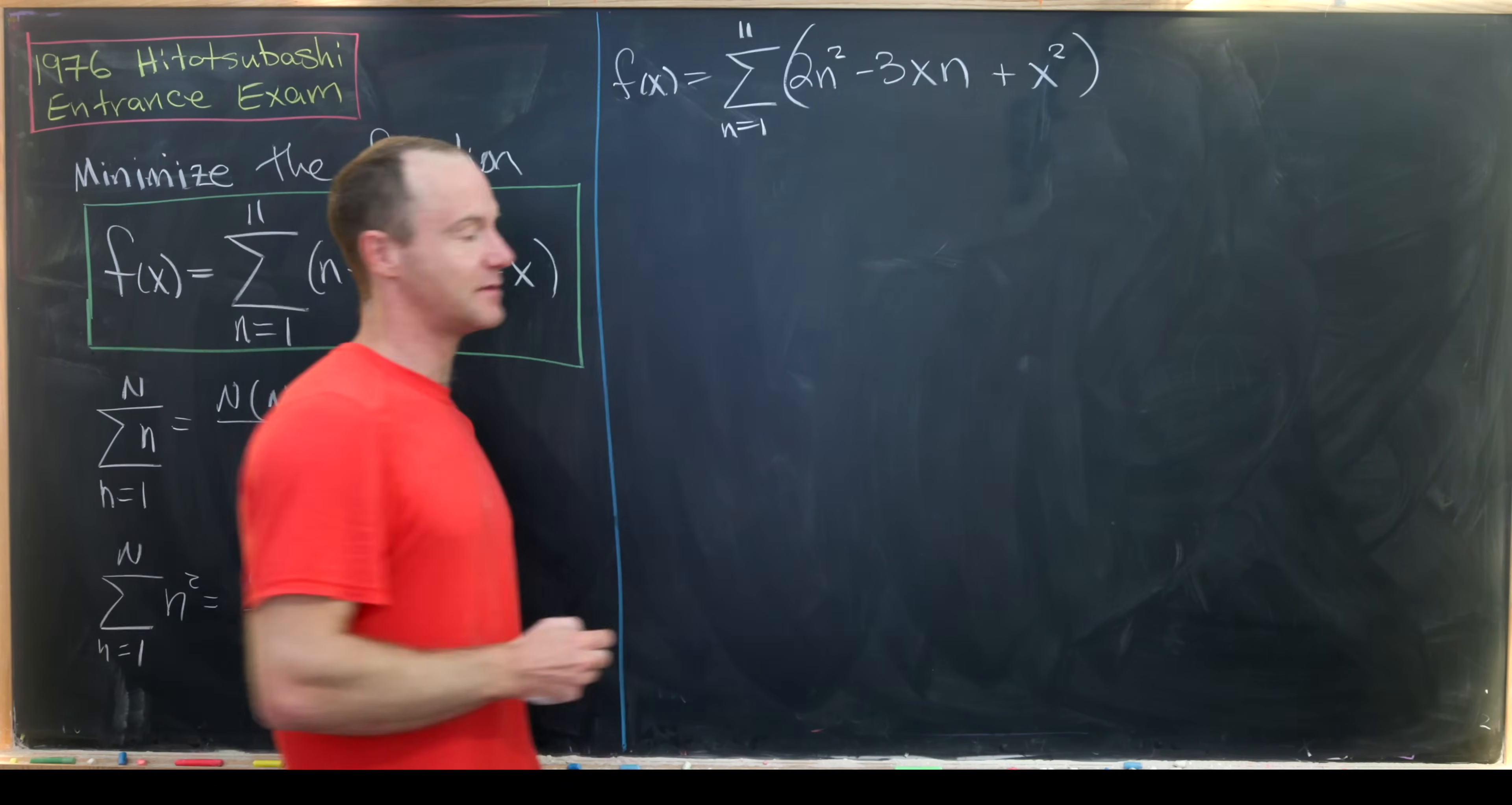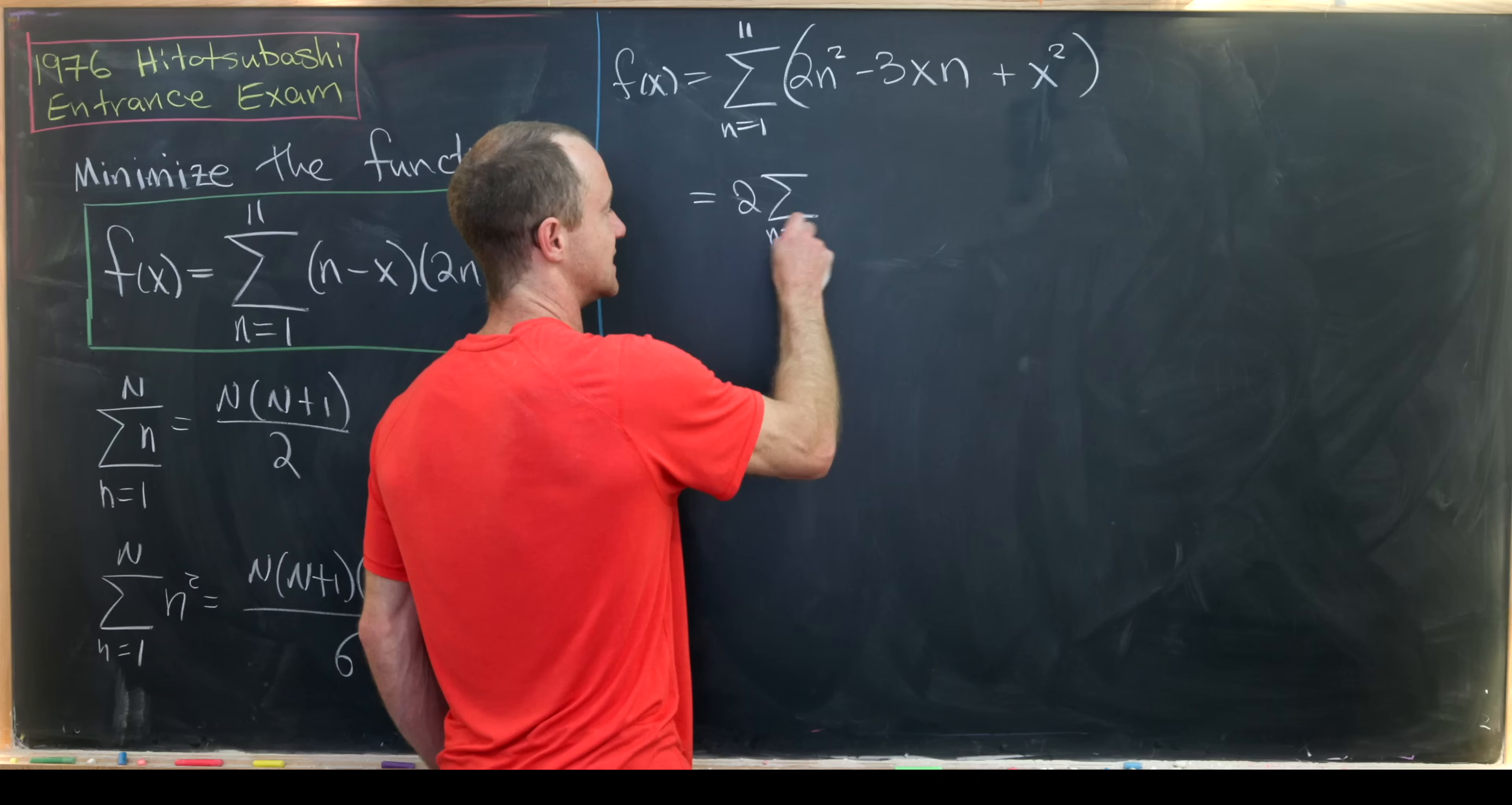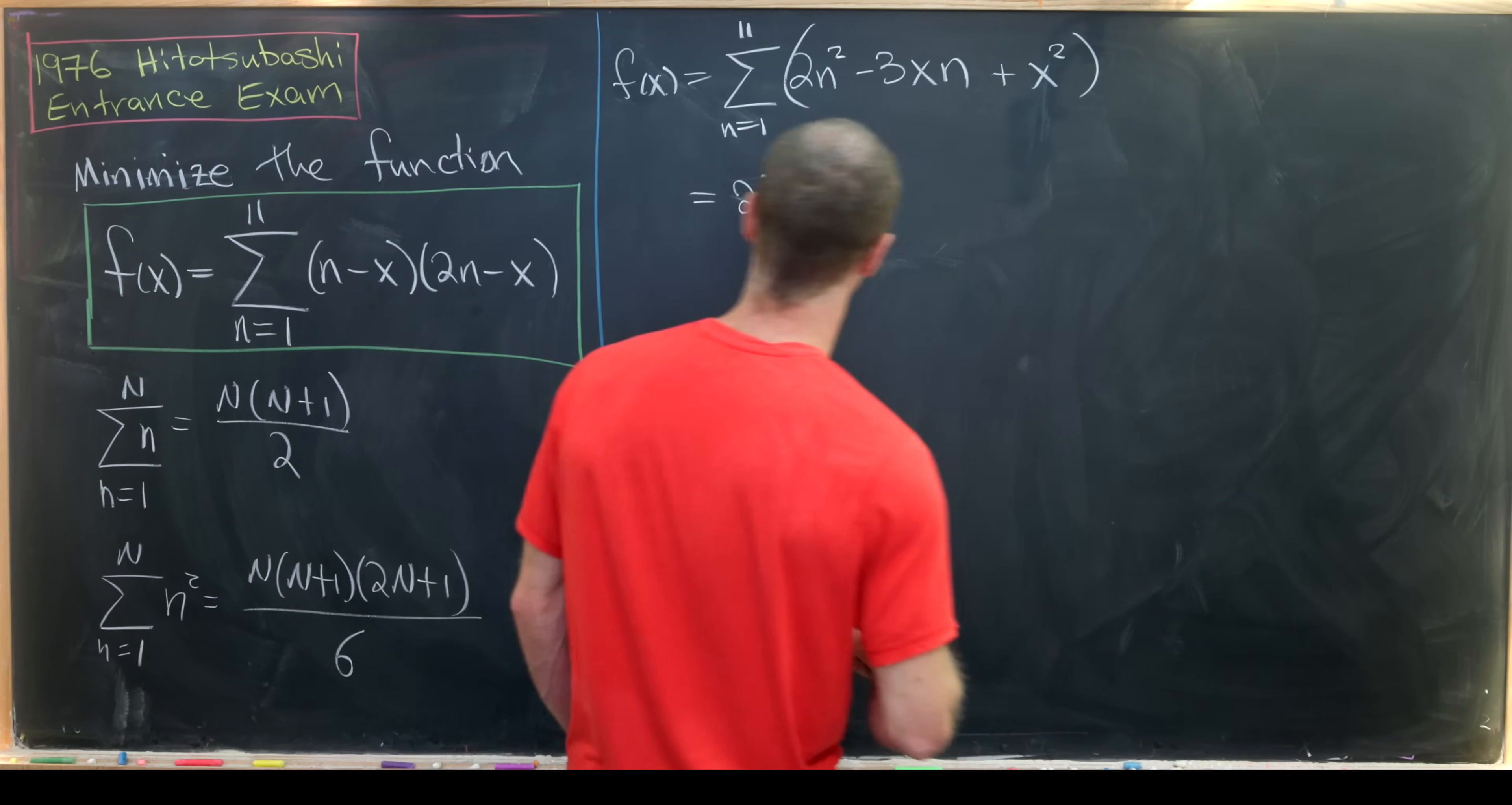Now we'll split this sum into three pieces. So this is going to be twice the sum as n goes from 1 to 11 of n². We're writing it like that so that we can directly use this second formula.